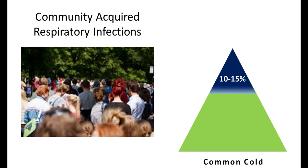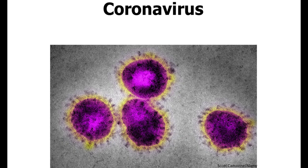Coronaviruses are a highly diverse family of viruses named because of the way they appear under the microscope. They have spike proteins that stick out, and they look like they have a little crown around the virus — hence the name corona. Coronaviruses are abbreviated CoV, taken from the first letters of coronavirus plus V for virus.